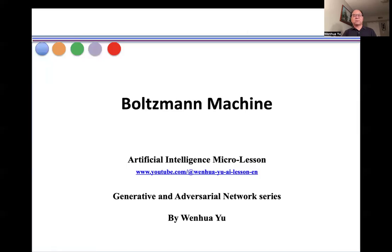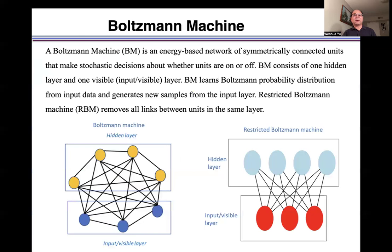In this video, I introduce a Boltzmann machine. A Boltzmann machine is an energy-based network that consists of one hidden layer and one visible layer.